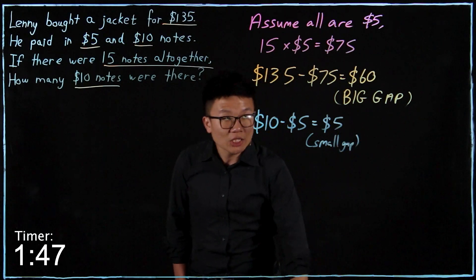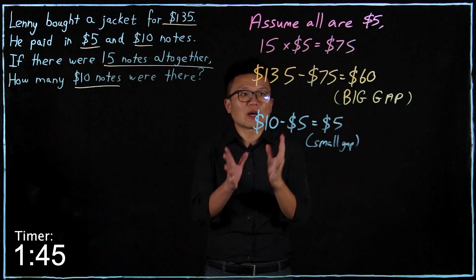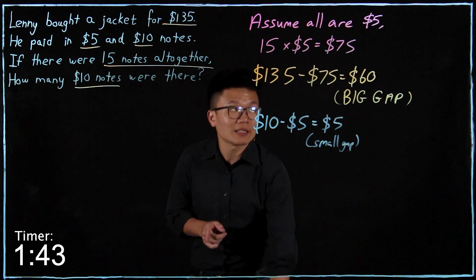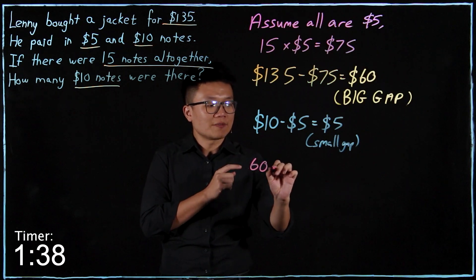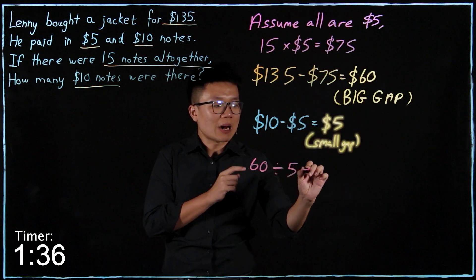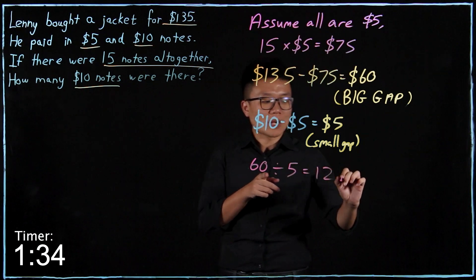So now I've been teaching that one big gap is made out of many small gaps. So big gap over small gap is 60 divided by 5. I will have 12. So this will be 12 notes.